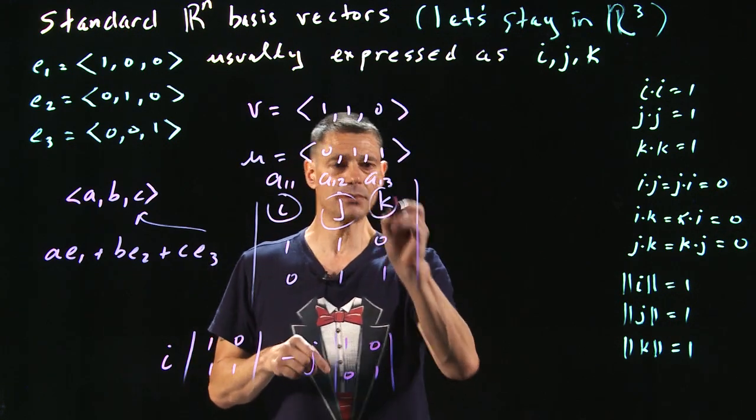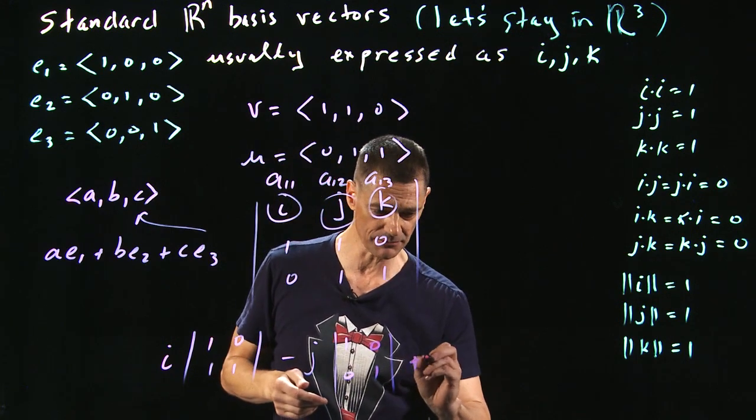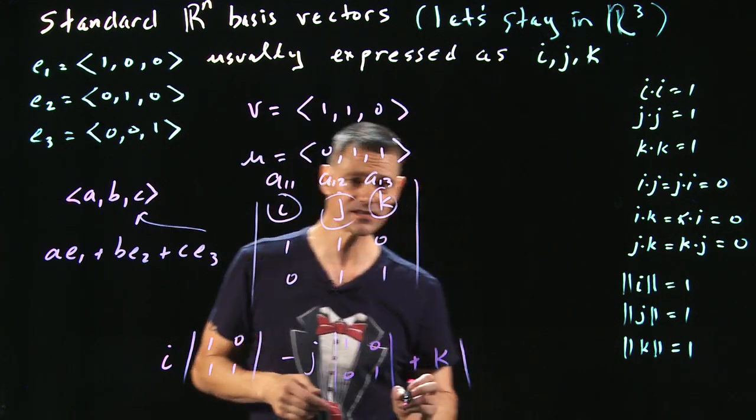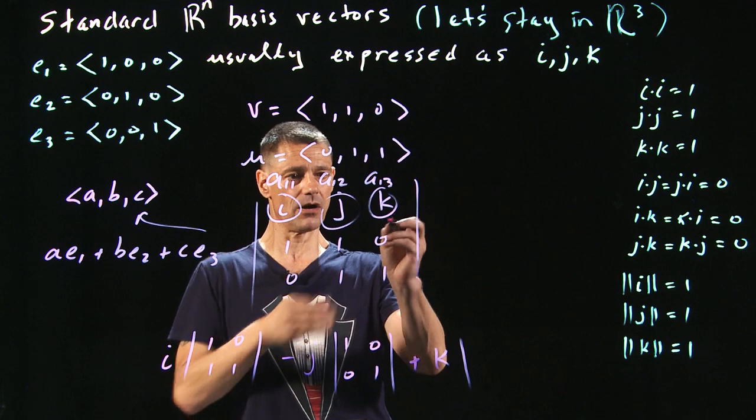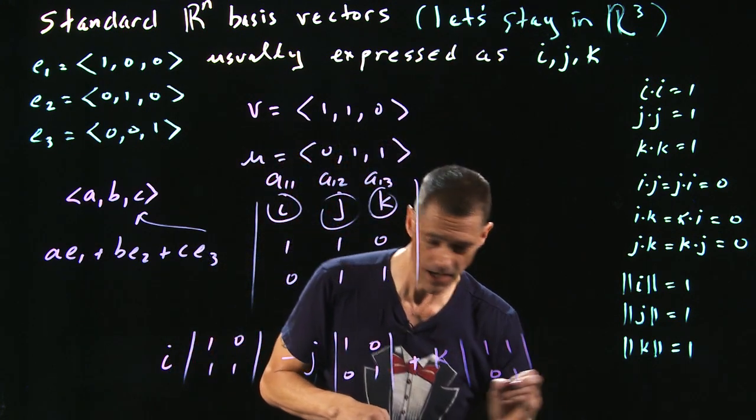And now we're going to put k in. And (-1)^(1+3) is to the fourth power, so it's just 1. So I'm going to put +k. And its respective minor, we take out the row, the column is 1, 1, 0, 1.